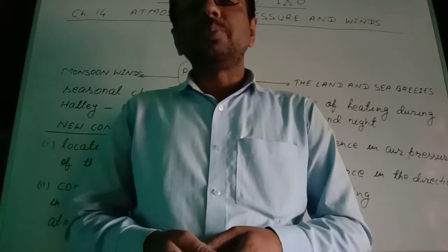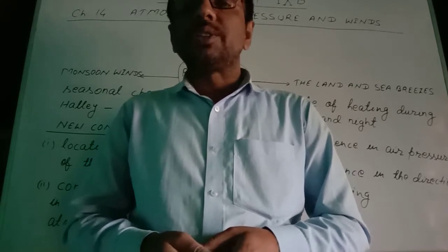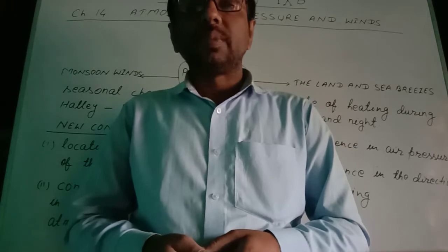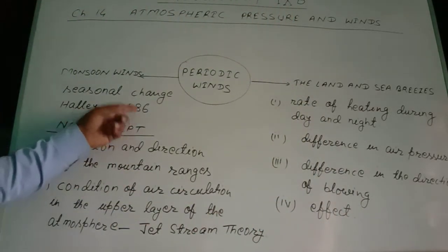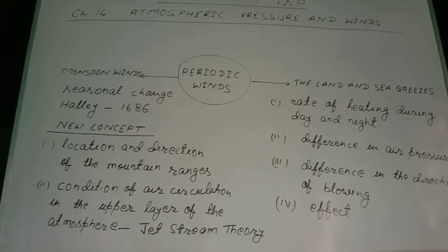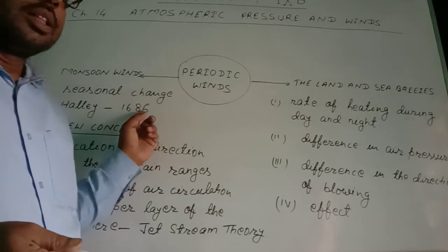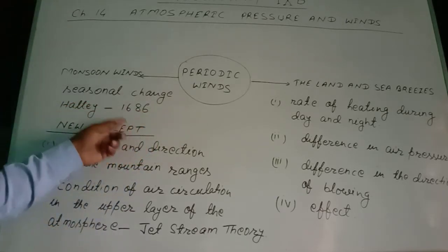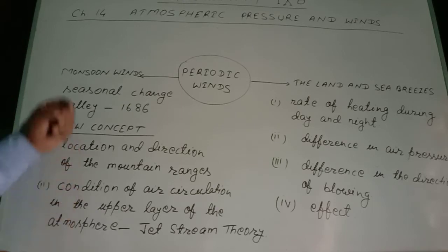So in these two particular seasons — summer and winter — we see the change in direction of the winds. This theory was given by Halley in 1686. But now this theory has lapsed in popularity regarding periodic winds.